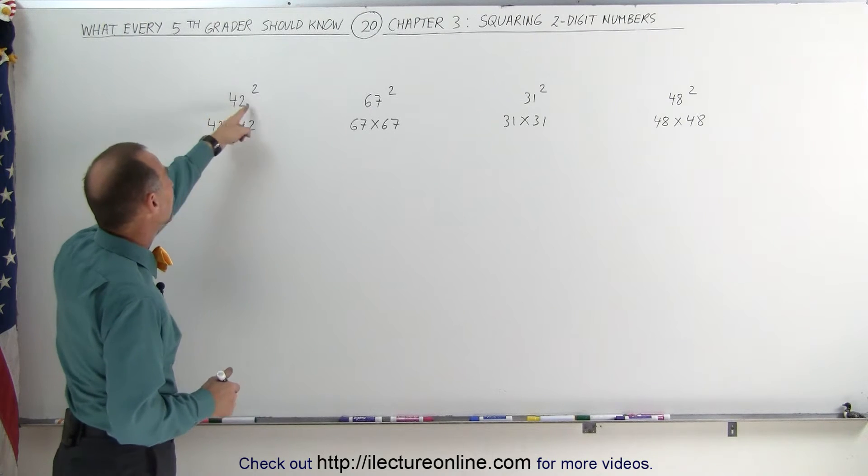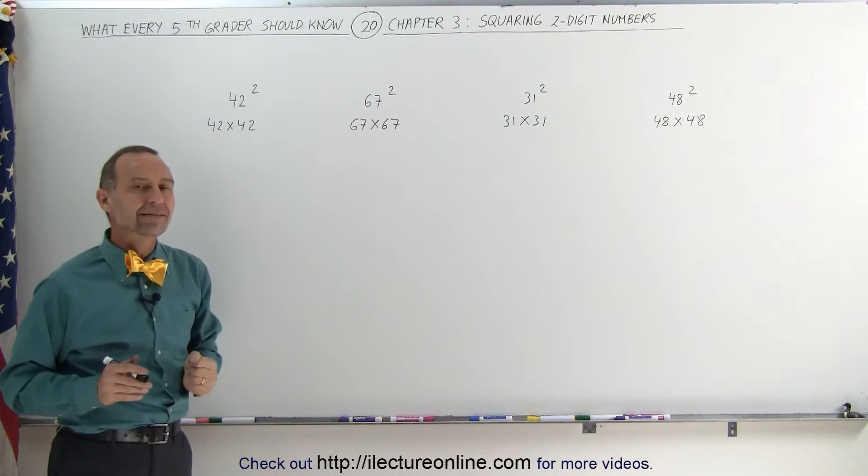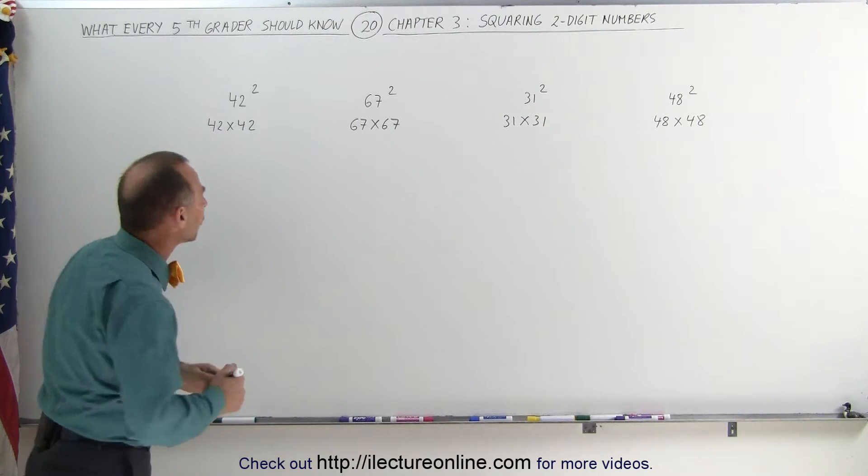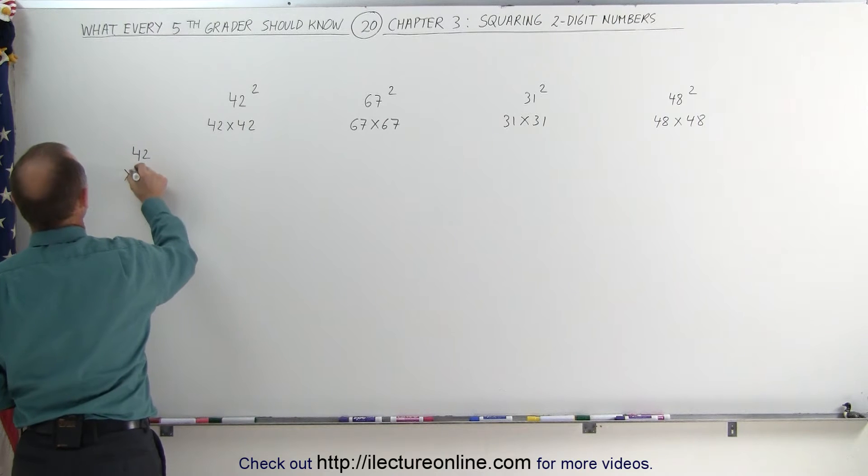For example, what's 42 squared? Well, you know that's 42 times 42, and how can you do that easily? Well, let's first do it the old-fashioned way. Let's simply multiply it out. 42 times 42.